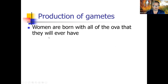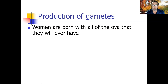Gamete production: women are born with all the ova they will ever have — no more after birth. Interestingly, all the ova inside a woman were exposed to everything her mom did while pregnant. Whatever your mom did while she was pregnant with you affected your ova and therefore affects your children. In reality, what your mom did affected her grandchildren because those ova were still in you while you were in her.